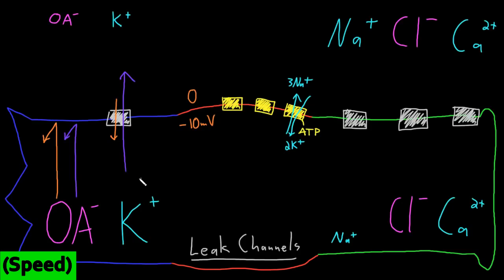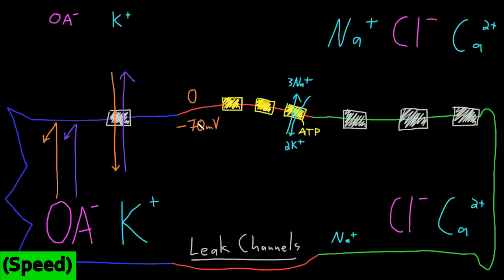As potassium ions leave the neuron carrying positive charges out, the inside of the membrane becomes more negative. The membrane potential grows with each potassium ion that leaves until the electrical force driving potassium in equals the diffusion force driving potassium out — the equilibrium potential. At typical neuron ion concentrations this occurs around negative 70 millivolts, more than enough for the neuron to function. Interestingly, it takes less than one percent of one percent of all intracellular potassium ions to exit for potassium to reach its equilibrium potential, so the effect on intracellular potassium concentration is negligible.